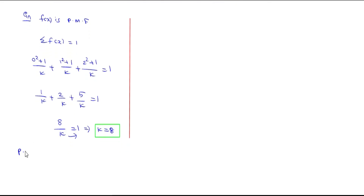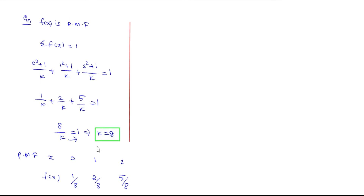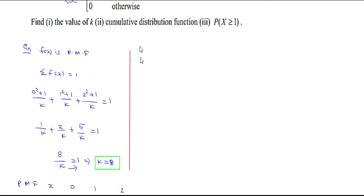Updating k = 8 into the probability mass function: f(0) = (0 + 1)/8 = 1/8; f(1) = (1 + 1)/8 = 2/8; f(2) = (4 + 1)/8 = 5/8. This completes Part 1 (finding k) and Part 2 begins (the PMF table).